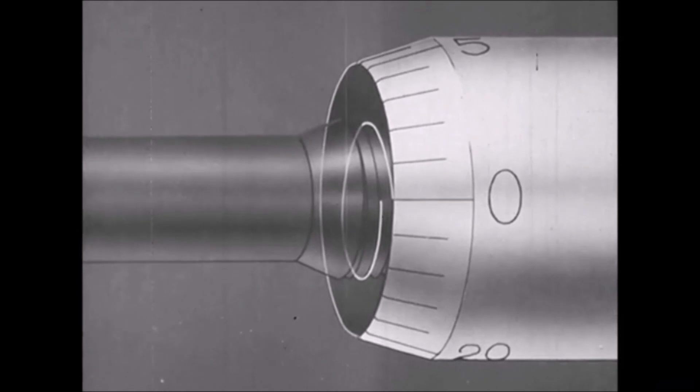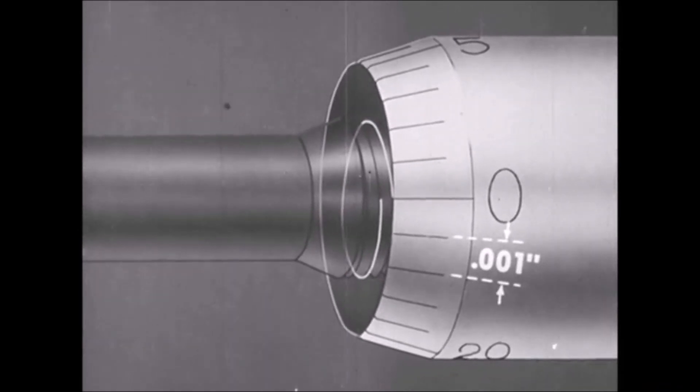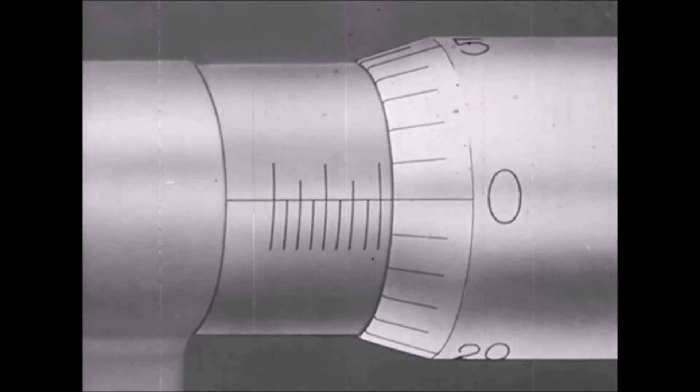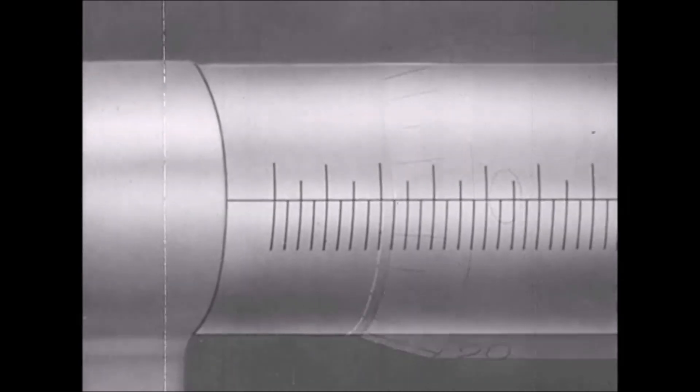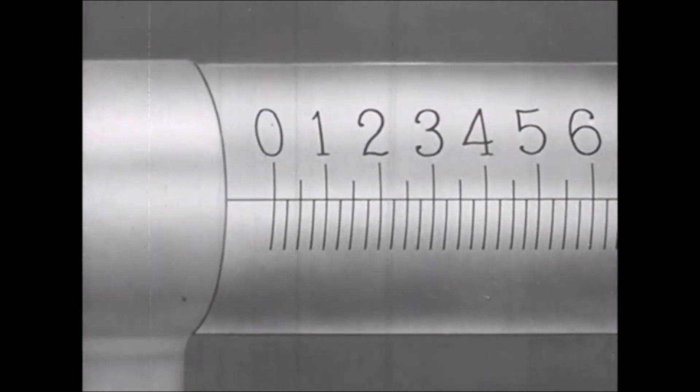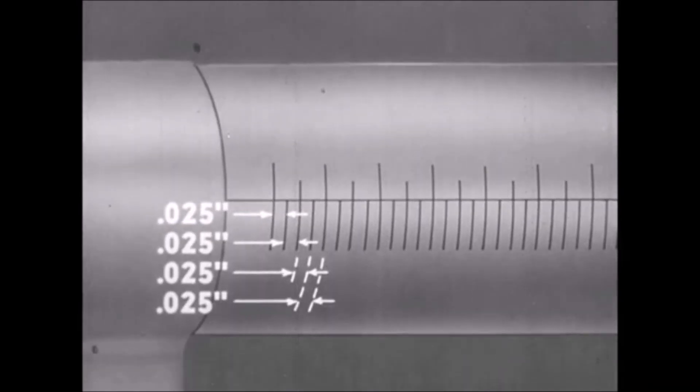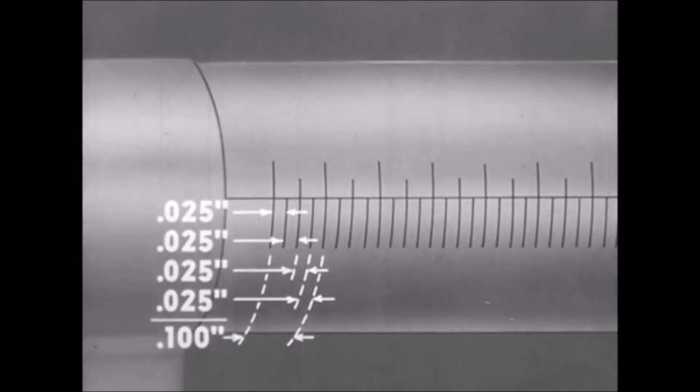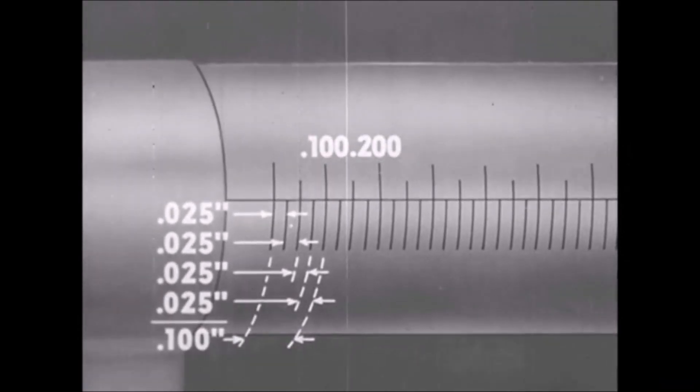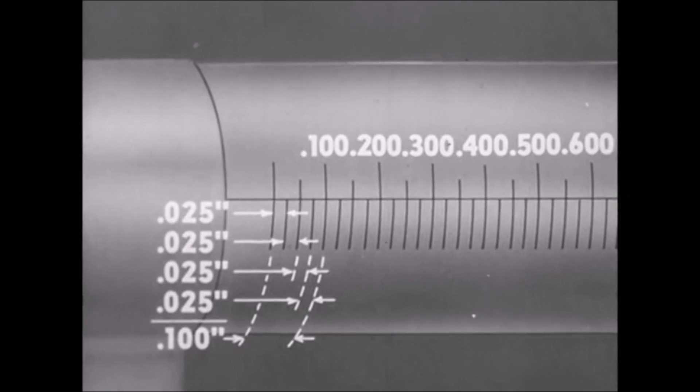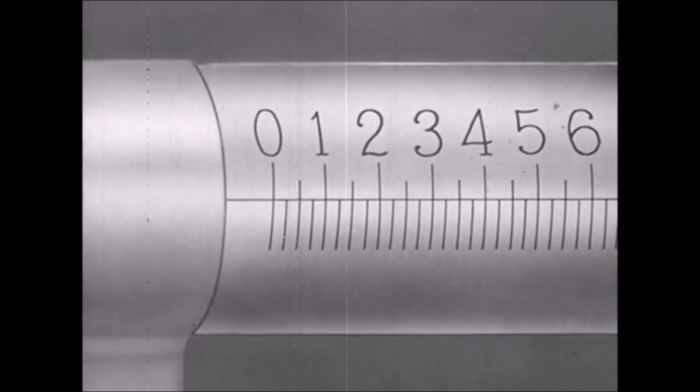Each division on the thimble represents a spindle travel of one one-thousandth. The scale on the barrel is graduated in 25 thousandths of an inch. Each turn of the thimble moves the spindle the distance of one graduation. Each fourth graduation is numbered. Four times twenty-five thousandths equals one hundred thousandths. The zeros are dropped in order to make the scale easier to read.